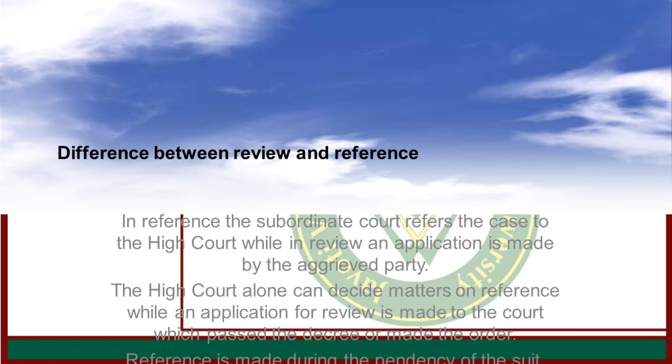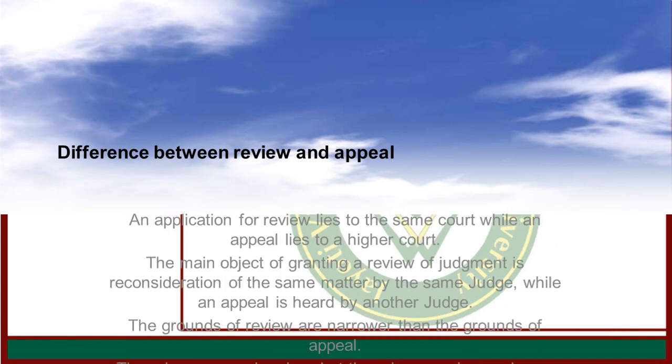While in review, an application is made by the aggrieved party to the same Court. Here is the difference between review and appeal: an application for review lies to the same Court, while an appeal lies to a higher Court.